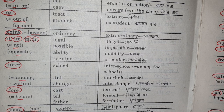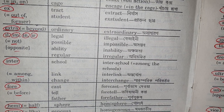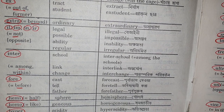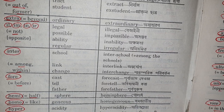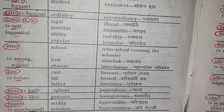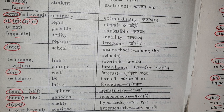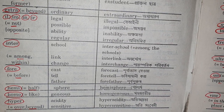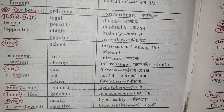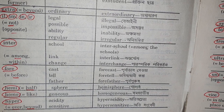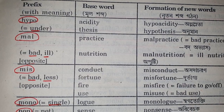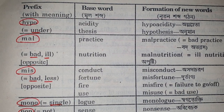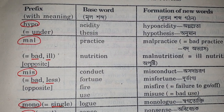Fore with the meaning of before — cast, forecast; tell, foretell. Hemi with the meaning of half — hemisphere. Homo with the meaning of like — genus, homogenous. Hyper with the meaning of over or beyond — sensitive, hypersensitive; acidity, hyperacidity. Hypo with the meaning of under — acidity, hypoacidity; thesis, hypothesis.